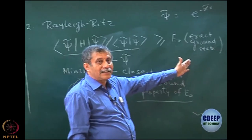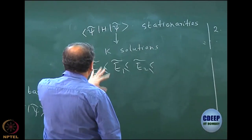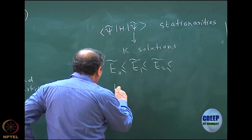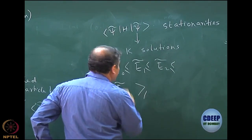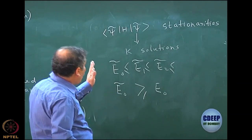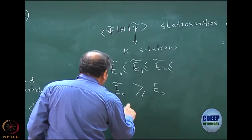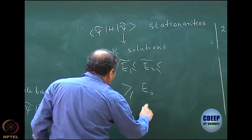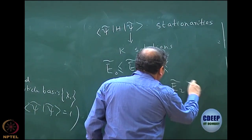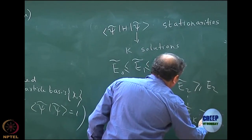Theorem 2 holds in this case. I order the solutions from the linear variation in this manner. What is interesting is that E_0 tilde, the lowest among the solutions, is going to be greater than E_0, and all others are also going to be greater than or equal to E_0. But more interesting is that the second solution E_1 tilde is also going to be greater than or equal to E_1, and E_2 tilde will be greater than or equal to E_2, and so on — all the way to E_k tilde greater than or equal to E_k.